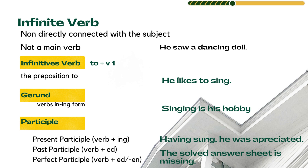The next type is infinite verb. An infinite verb is not connected with the subject and is not the main verb. For example: 'He saw a dancing doll' — 'dancing' is a verb there, but it is not the main verb; that is an infinite verb.